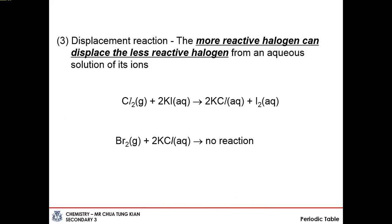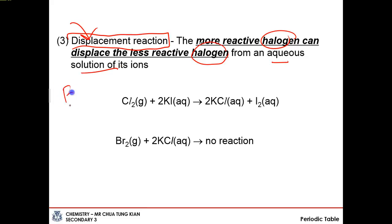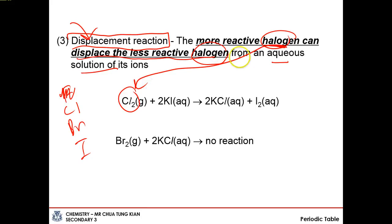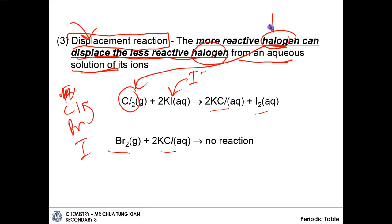One special reaction you need to know for halogens is the displacement reaction. This is a very common O-level question. The more reactive halogen displaces the less reactive halogen from an aqueous solution of its ions. For example, Cl2 added to KBr: chlorine is more reactive than bromine, so reaction proceeds to give KCl plus Br2. However, if you add bromine to a chloride solution, no reaction occurs because bromine is less reactive than chlorine — only the more reactive halogen can displace the less reactive one.